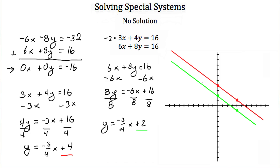Notice that these lines are parallel — they never intersect. They have the same slopes, so we know they're parallel, and since they don't intersect, that's why we couldn't find a solution before. Whenever we have parallel lines, that system of equations has no solution.